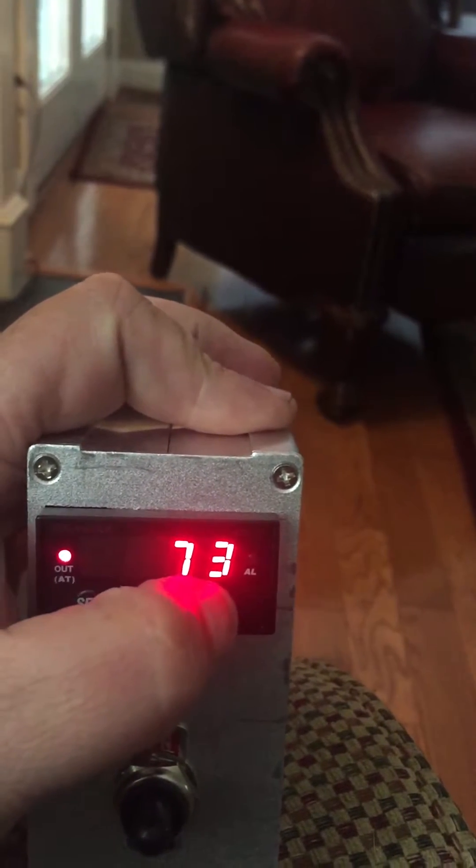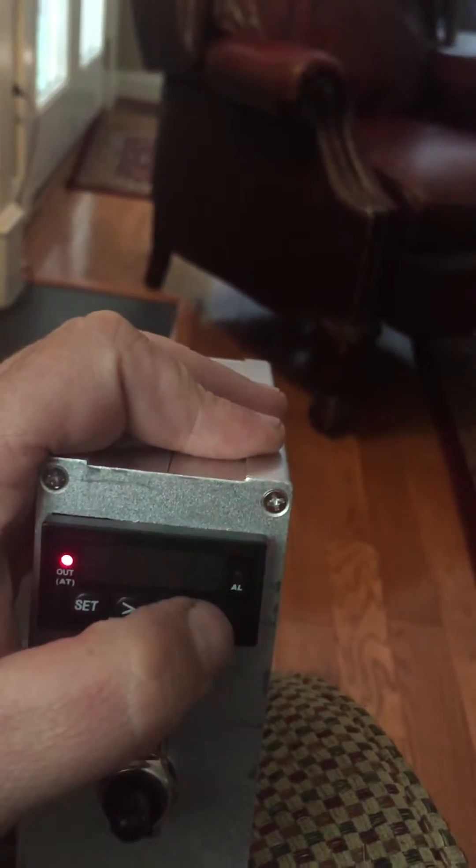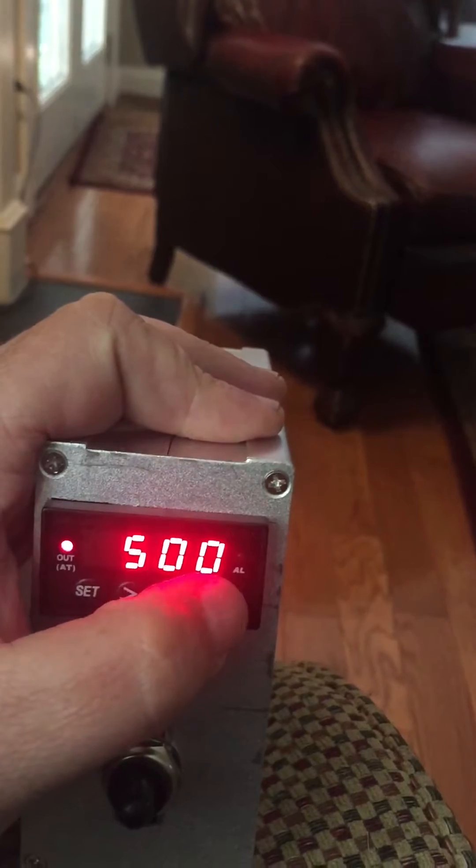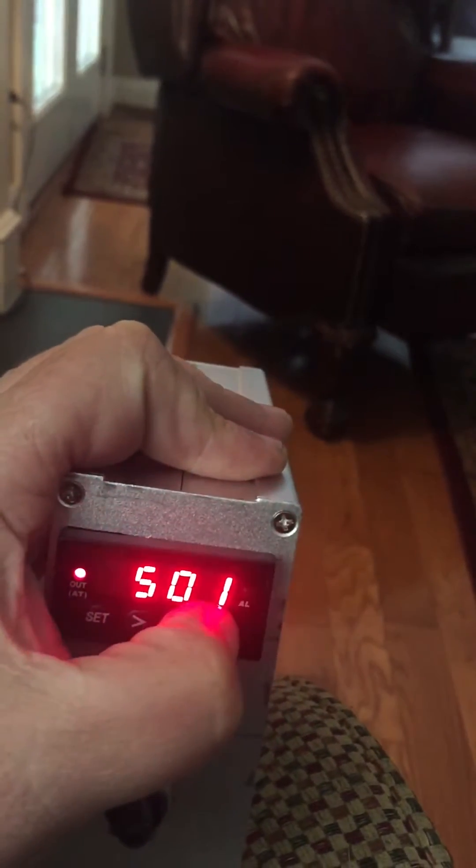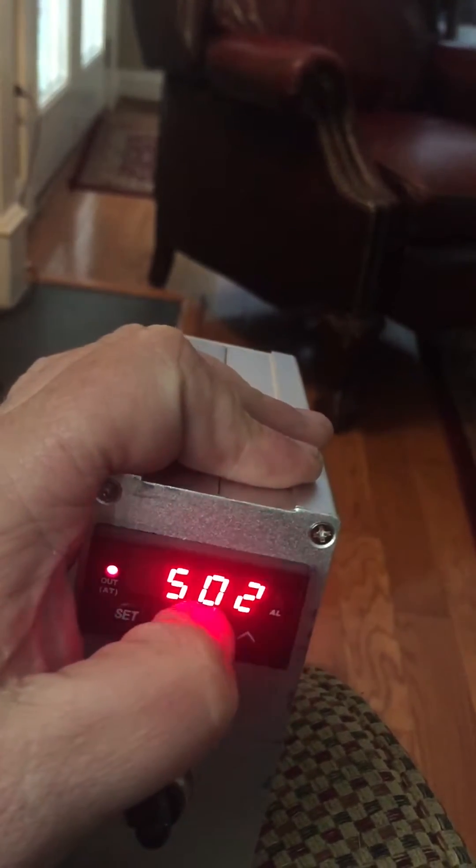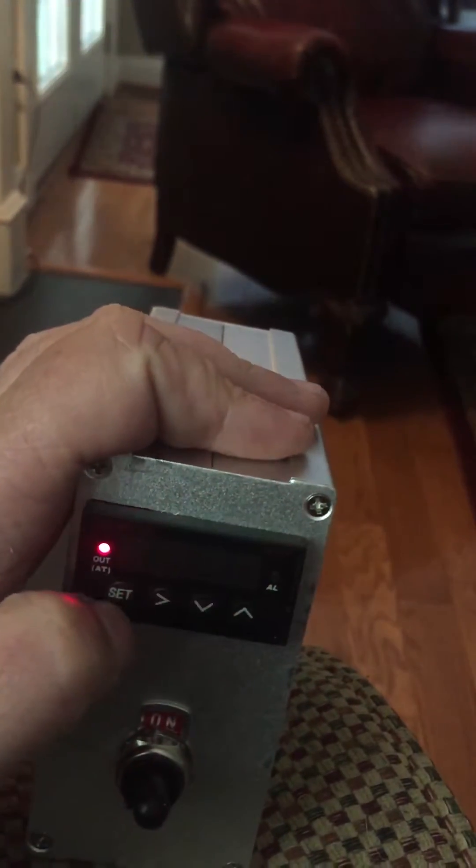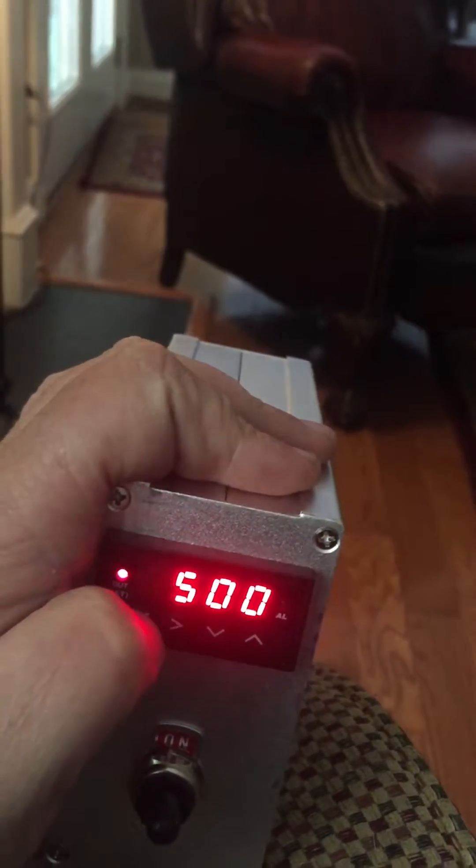Now if you want to change the temperature, you hit one of these buttons and you adjust it to whatever you want. I'll put it back on 500. Then you hit set twice.